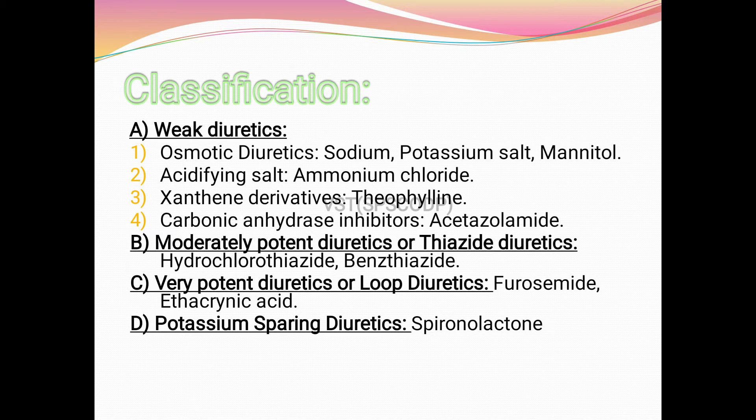Moderately potent diuretics, or thiazide diuretics — examples include hydrochlorothiazide and benzthiazide. Very potent diuretics, or loop diuretics — examples include furosemide and ethacrynic acid. Potassium-sparing diuretics — example: spironolactone.